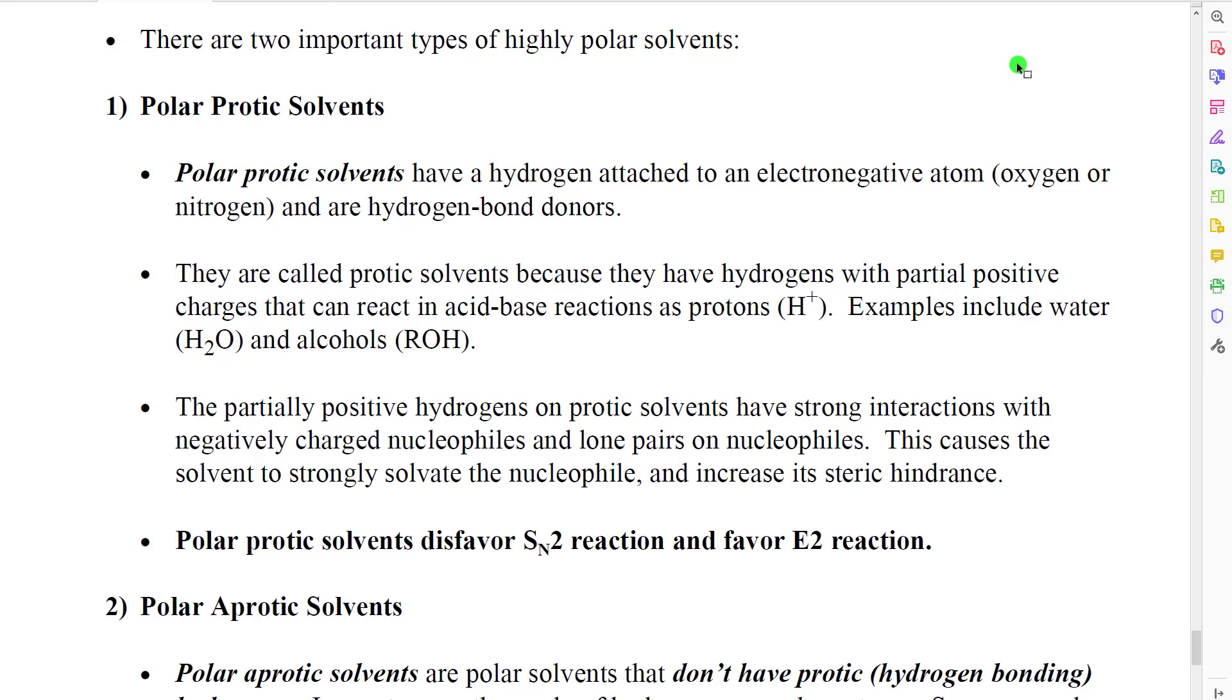The first is what is called a polar protic solvent. A polar protic solvent are essentially solvents that have hydrogen bond donors. They have a hydrogen attached to an electronegative atom like an oxygen or a nitrogen. That hydrogen has a significant amount of partial positive charge. And if we were put it into a hydrogen bond with a hydrogen bond acceptor, it would form hydrogen bonding. We call them protic solvents because those positively charged hydrogens are essentially reminiscent of hydrogen plus, which is basically a proton. Examples of polar protic solvents include water and alcohols, which are two very common solvents that we use when we need to dissolve ionic substances.